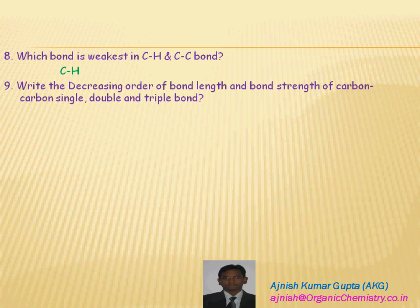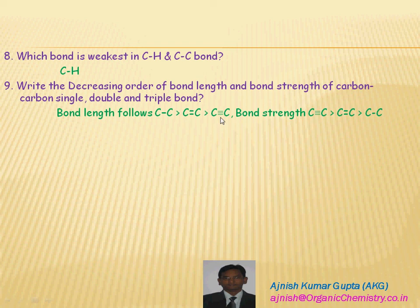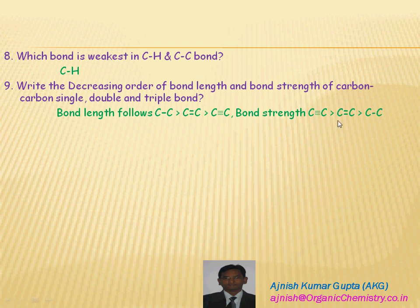The decreasing order of bond length of carbon-carbon single, double, and triple bonds: single bond is larger than double bond, which is larger than triple bond. The bond length of carbon-carbon single bond is 1.54 Å, double bond is 1.34 Å, and triple bond is 1.20 Å. In benzene, all carbon-carbon bond lengths are 1.39 Å. For bond strength, the triple bond has the largest value, greater than double bond, and the single bond has the lowest strength.